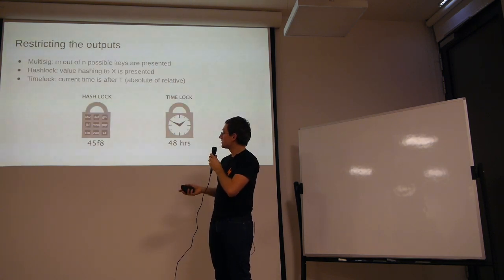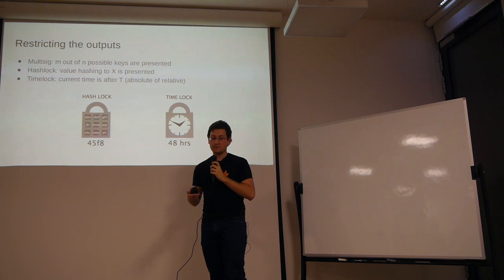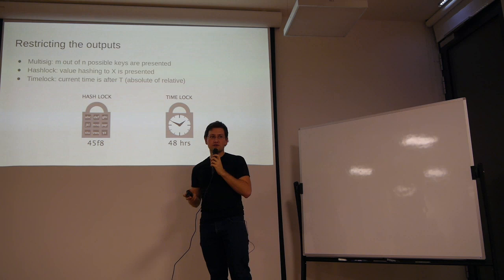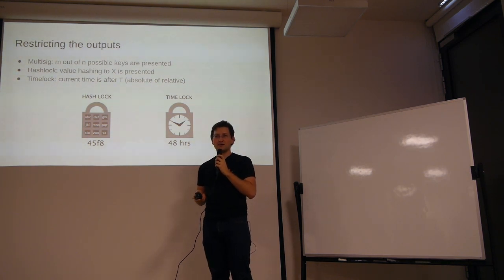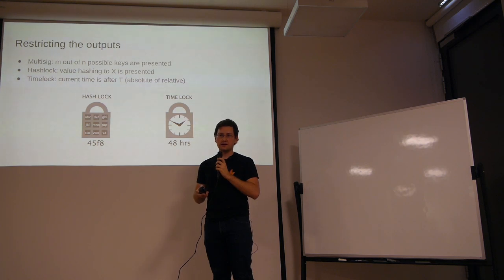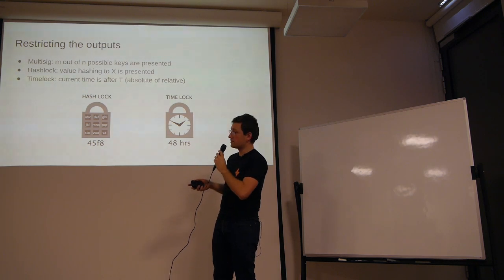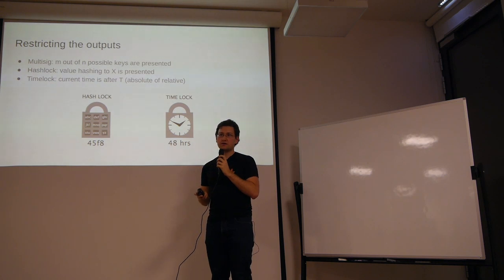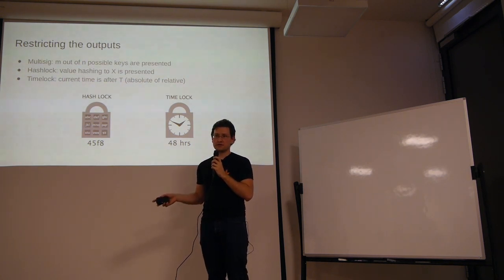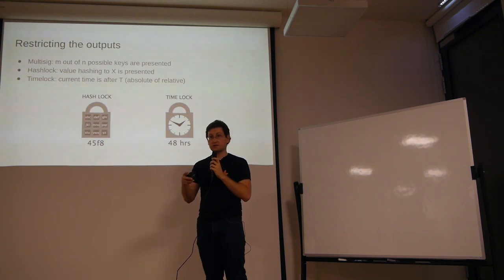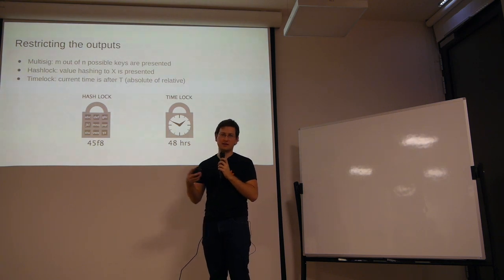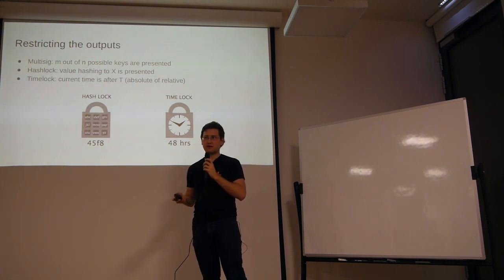There are three pieces that Lightning combines to achieve its peaceful properties: multi-signatures, hash locks, and timelocks. Multi-signature is just what it says — it allows multiple parties to cooperate to spend some coins. A script may require some m number of signatures out of possible n signatures. We can set up schemes like two-out-of-three multi-sig, where two keys are stored at different locations and the third key is at a trusted party. That party cannot spend the coins alone, but if I lose one key, I can go to that party and recover my bitcoins.